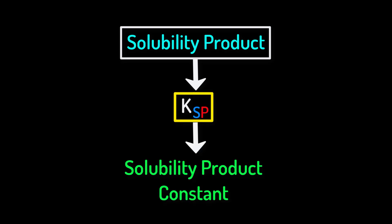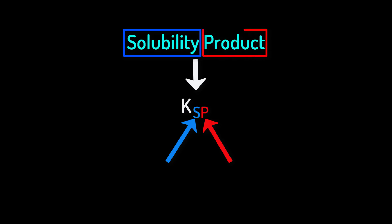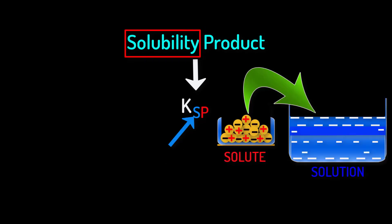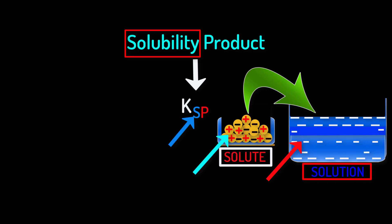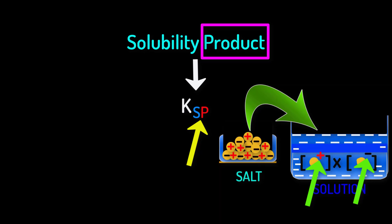KSP is called the solubility product constant. Here S stands for solubility and P stands for product. Solubility S is defined as a property of a substance called solute to get dissolved in a solvent in order to form a solution. On the other hand, product P means the result of multiplication of the concentration of dissolved positive and negative ions of a salt in an equilibrium state.